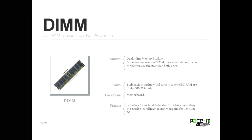From SDRAM, we moved into DIMMs — Dual Inline Memory Modules. DIMMs were an improvement over SIMs. The main difference was that a SIM had electrical connectors on both sides, but only one side was being used. With DIMMs, they actually used both sides of the electrical contact. All current memory is a type of DIMM — they're in the DIMM family.